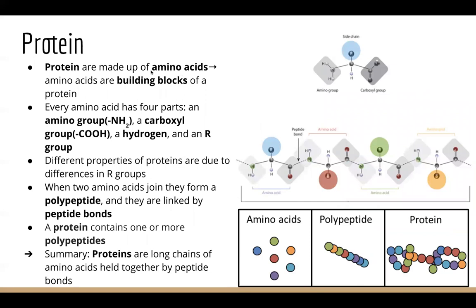Proteins are made up of something called amino acids — amino acids are the building blocks for protein. Here's a picture of an amino acid. Each amino acid contains four parts: an amino group, which is an NH2 group; a carboxyl group, which is a COOH group; a hydrogen; and an R group. Another name for the R group is a side chain. Differences in this side chain, or R group, can cause different properties of the protein. Once we connect two amino acids together, we form something called a polypeptide, and the two amino acids are connected by something called a peptide bond.